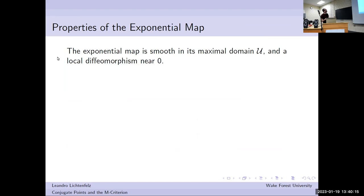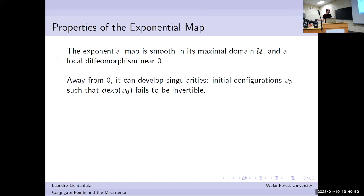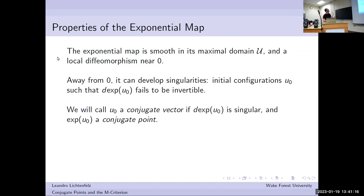We know that this map is smooth wherever it's defined, on some open set, and it's a local diffeomorphism near zero. The objects you're dealing with — U0 and u and so on — have some finite regularity, they're H^s. But if you think of this as a function of U0, then it's actually C-infinity in that sense — that dependence is smooth. But if you move sufficiently far away from zero, this map can develop a singularity. There are initial configurations U0 such that when you look at the derivative of this map, it fails to be invertible.